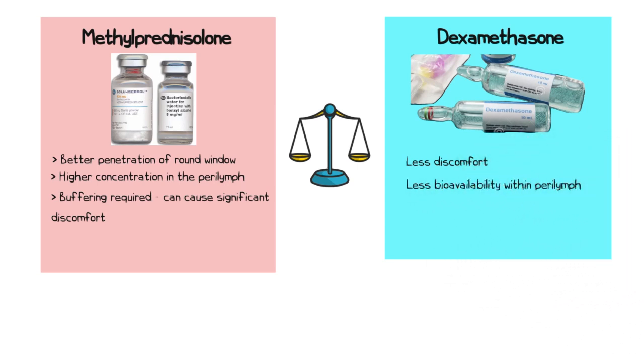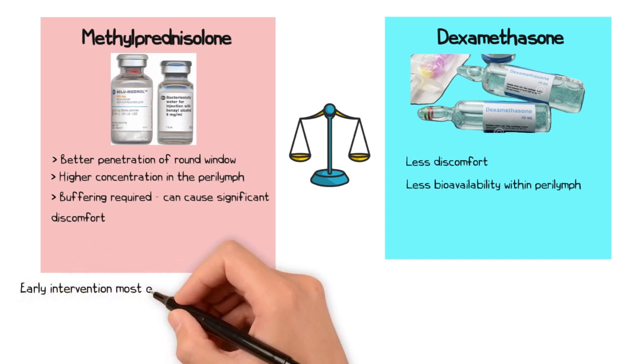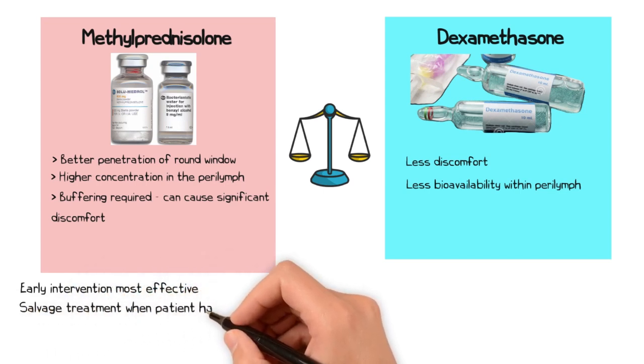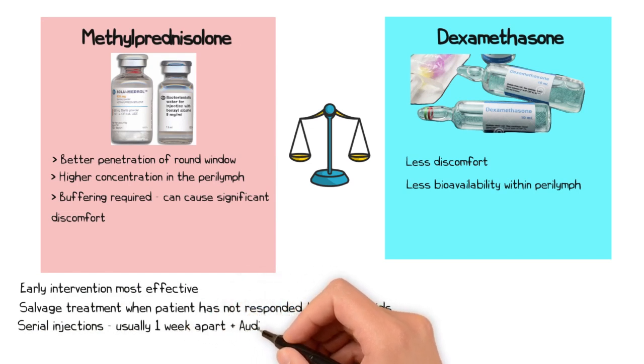Early intervention with intratympanic steroids, especially within the first two weeks of onset, is most effective. They are usually reserved as a salvage treatment in cases where the patient has not responded to oral steroids. Due to logistical reasons, serial injections are usually offered one week apart, with audiometry provided before each injection to assess for response.